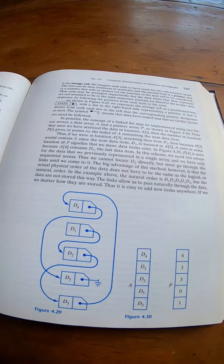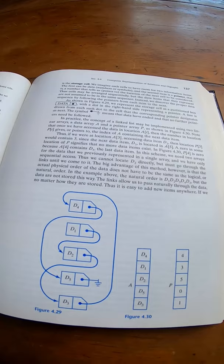So if you're looking for a beginner book on discrete math, this is a really good choice. Again, the book is Discrete Mathematical Structures, and it's the book by Coleman, Busby, and Ross.